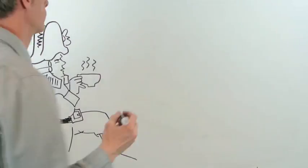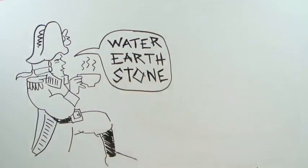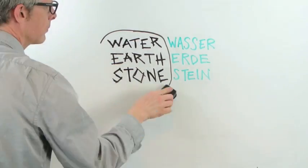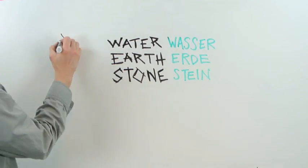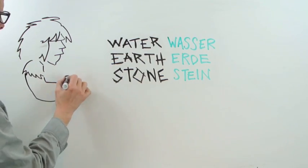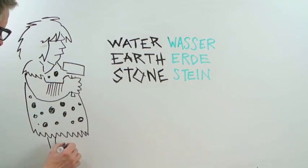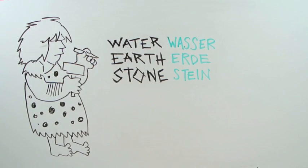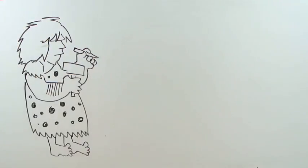In contrast, our Germanic words harken back to the pre-civilized basics. Water. Earth. Stone. Heart. Blood. Birth. Death. We did not borrow these essential words from German. Rather, both German and English evolved from a common ancestor.